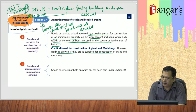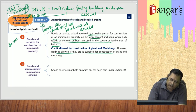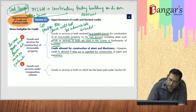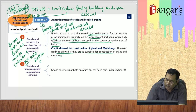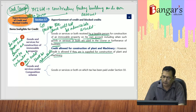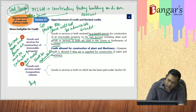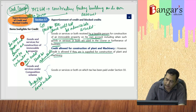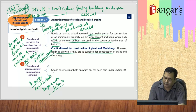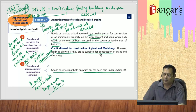However, credit is allowed when goods and services are supplied for construction of plant and machinery. Section 17(5)(e) provides that goods and services on which tax has been paid under section 10 (composition scheme) — credit won't be admissible. Section 17(5)(f): goods or services received by a non-resident taxable person — credit shall not be admissible. However, if any goods are imported by the NRTP, then integrated tax paid on imports shall be admissible as credit.